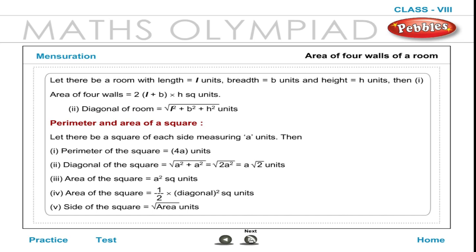Area of 4 walls of a room. Let there be a room with length L units, breadth B units and height H units. Then: 1. Area of 4 walls is equal to 2(L + B) × H square units. 2. Diagonal of a room is equal to √(L² + B² + H²) units.